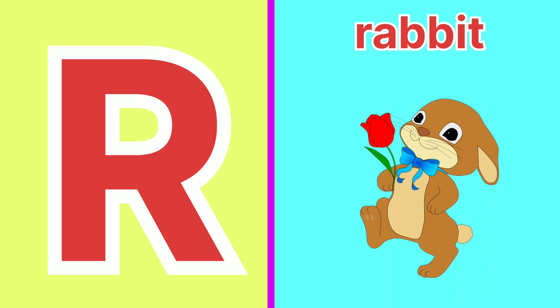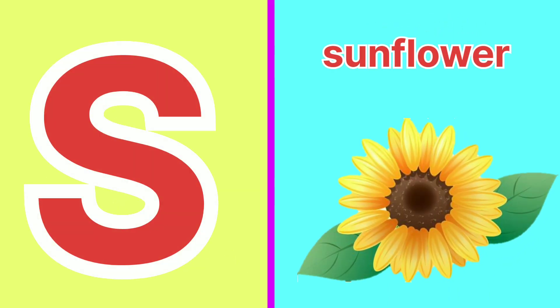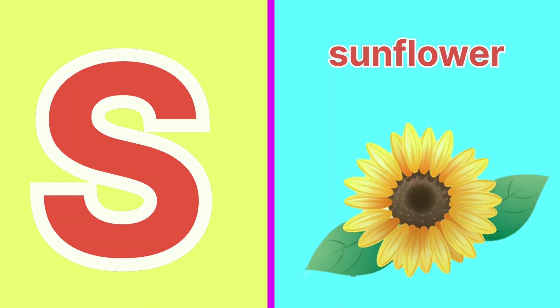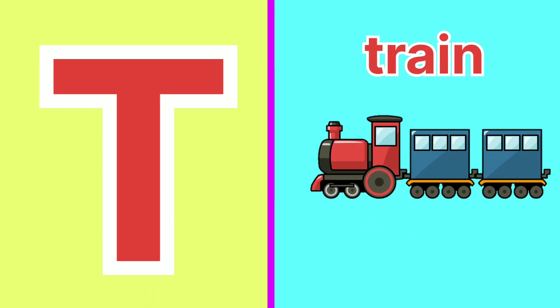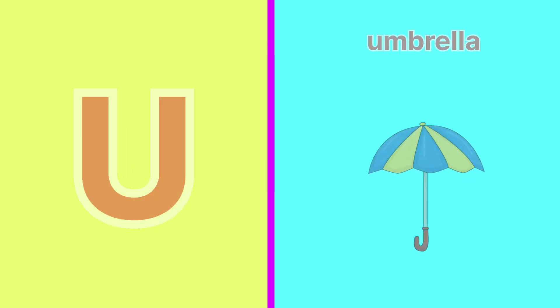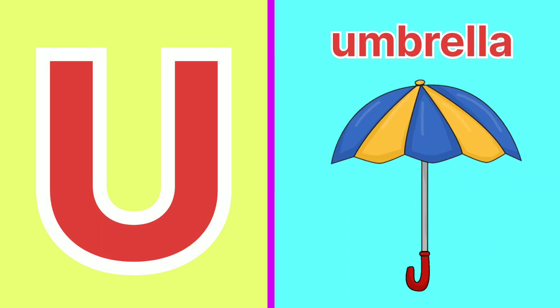R for Rabbit. S for Sunflower. T for Train. U for Umbrella.